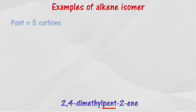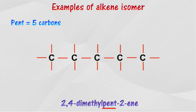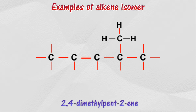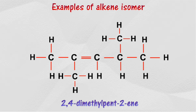There are 5 carbon atoms in the longest chain, so it's called pentene. The double bond position is at the second carbon atom, so it's called pent-2-ene. With methyl groups positioned at the second and fourth carbon atoms, it's called 2,4-dimethylpent-2-ene.